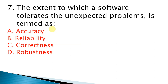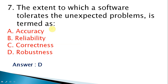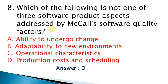Seventh question: the extent to which a software tolerates unexpected problems is termed as — the correct answer is robustness. When you are using software and an unexpected problem occurs, how the software performs in that situation — that is what we call robustness.